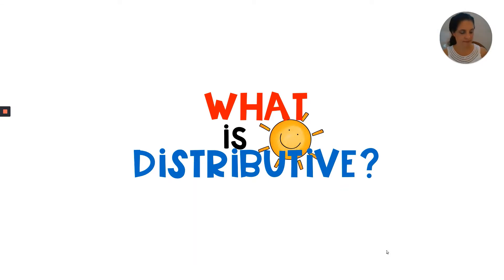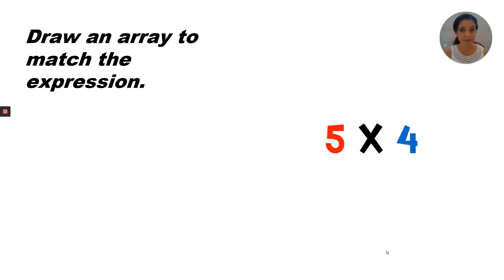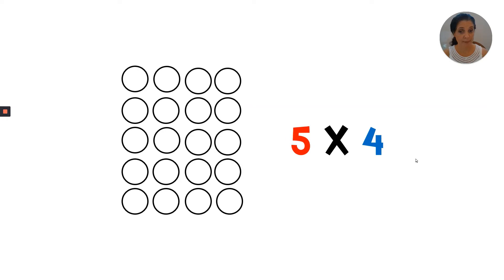What is distributive? When you break apart a larger expression into two smaller expressions and add the two products together, that is the distributive property. Draw an array to match the expression. Our expression is five times four — that's five rows of four. It should look like this: five rows with four in each row. This is a five by four expression array.